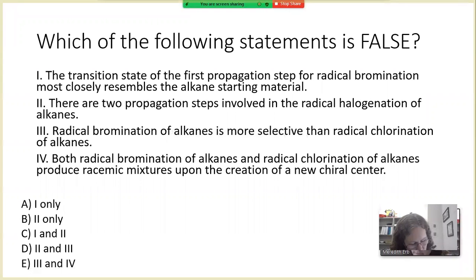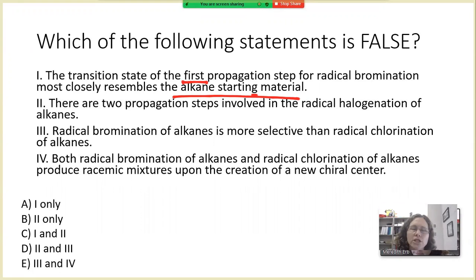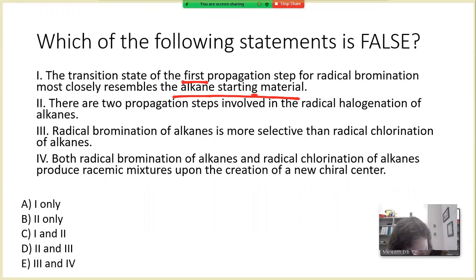The first statement says the transition state of the first propagation step of radical bromination most closely resembles the alkane starting material. This is a difficult statement to think about because you have to really understand the mechanism of the reaction — specifically, what molecule the transition state most closely resembles.